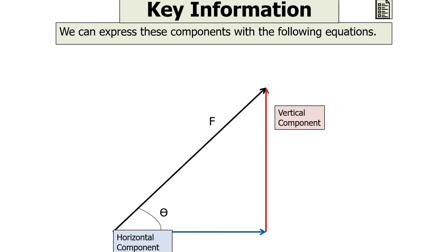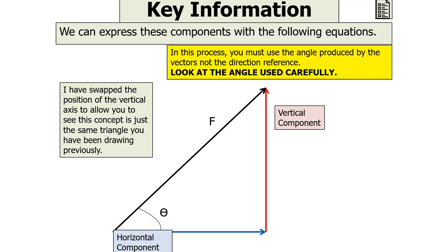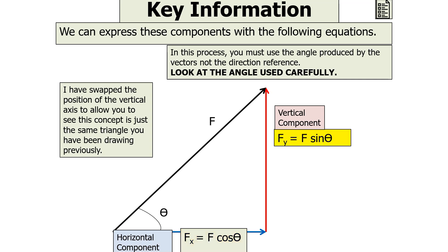We can rewrite this to make it a little bit easier. I've swapped the position of the vertical axis to allow you to see this concept is the same as the triangle drawn previously. In this process, you can use the angle produced by the vectors, not the direction reference — look at the angle used carefully. The horizontal component Fx is equal to F cos theta, and the vertical component Fy is equal to F sin theta.